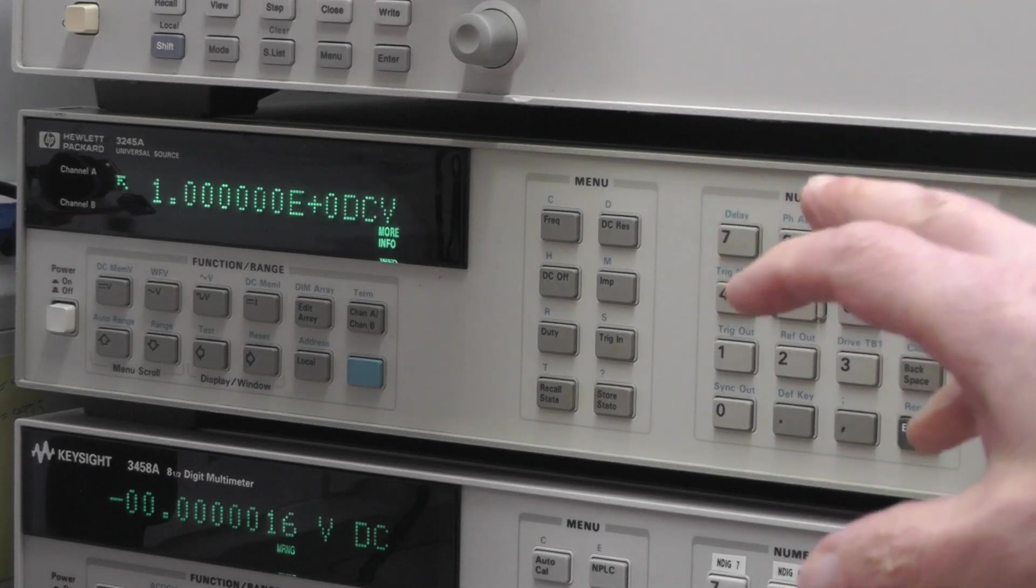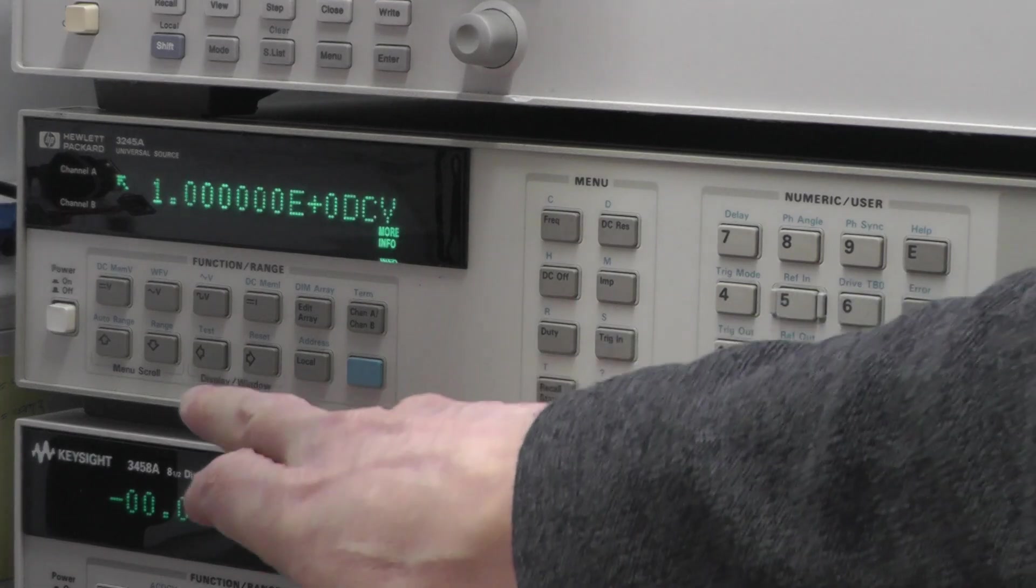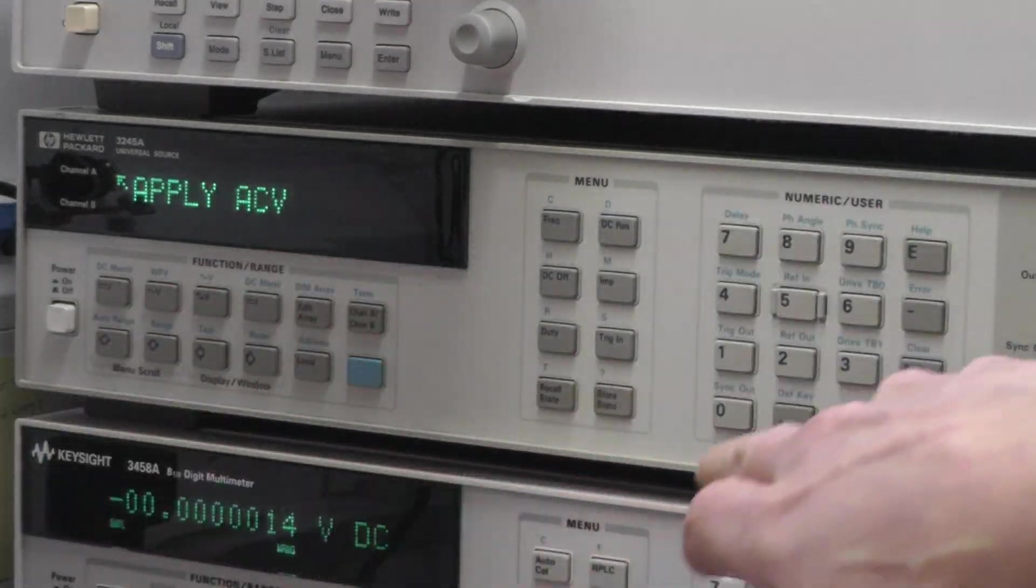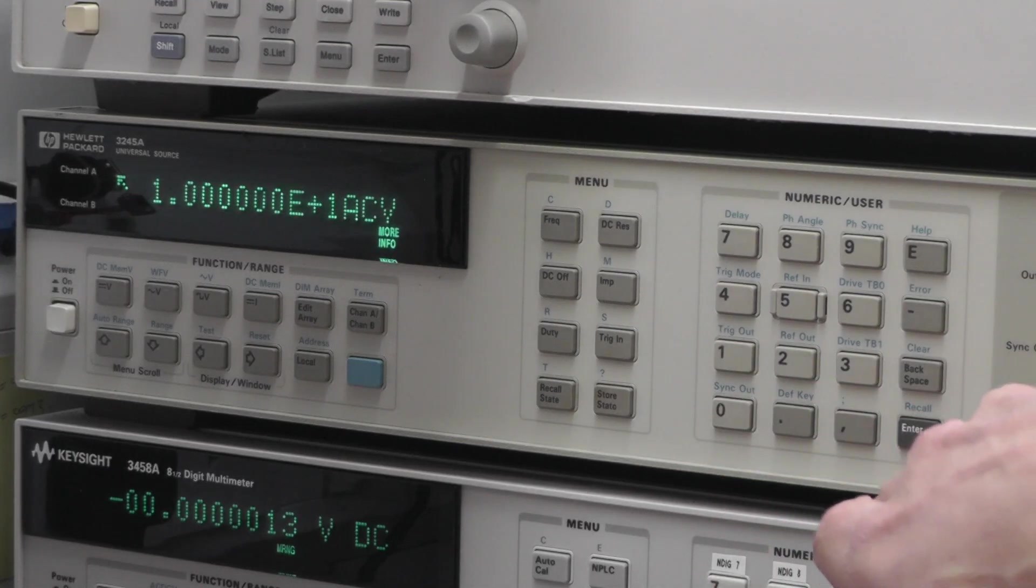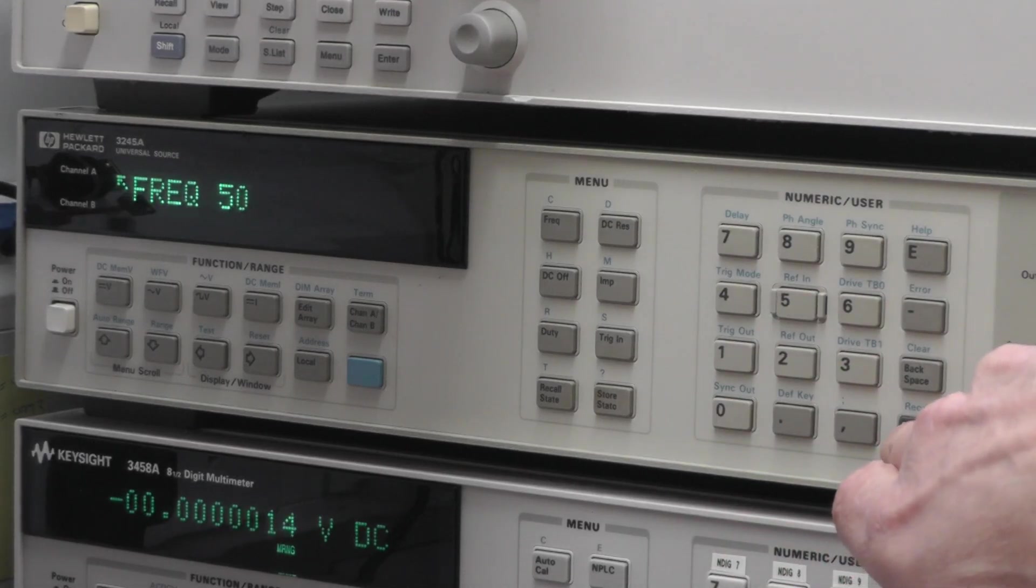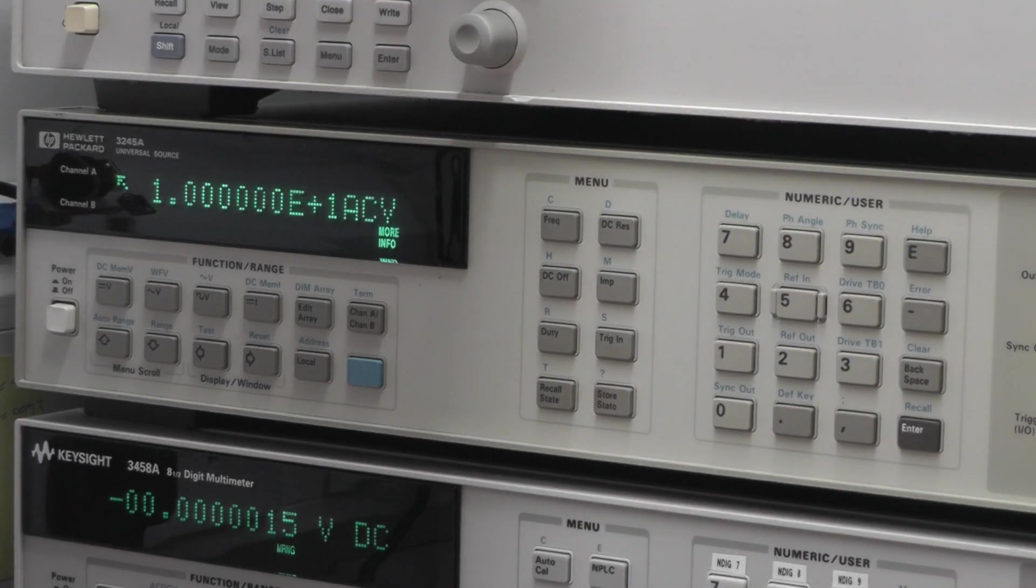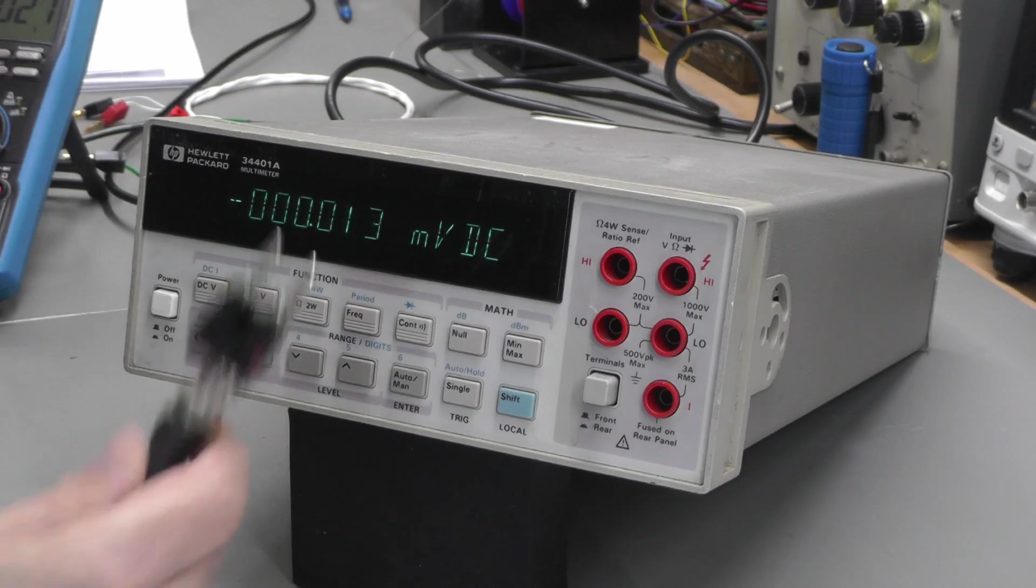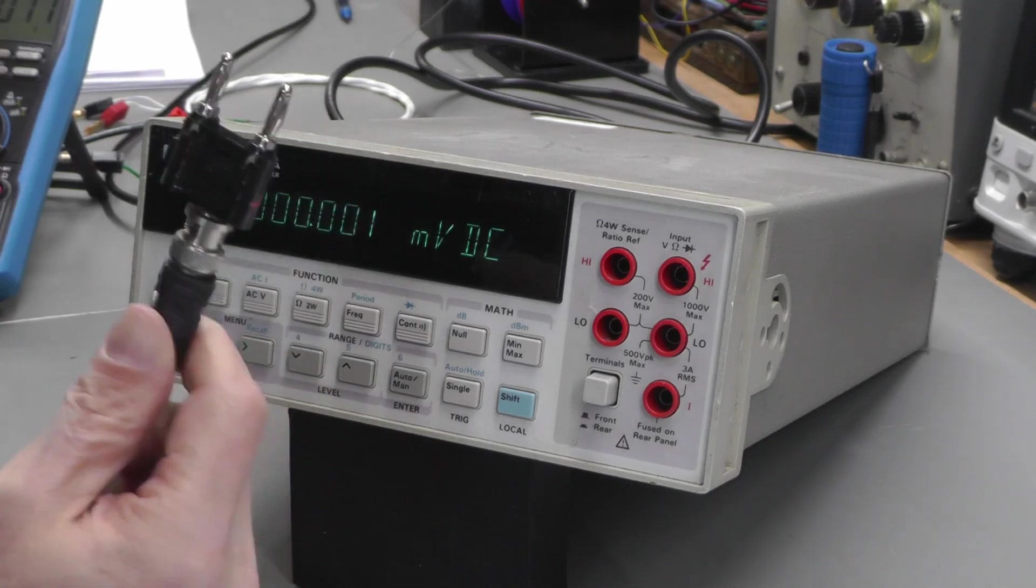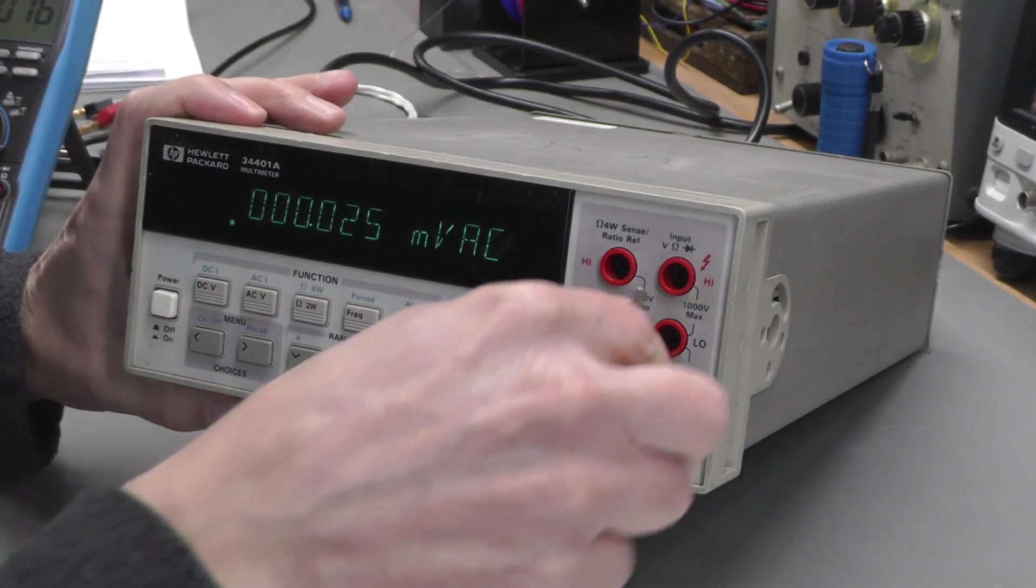To deliver an AC test voltage, I'm going to use my HP 3245A. First things first, let's set it for AC volts, 10 volts, and I'll set the frequency to 50 hertz. That's all set. Should be getting an output now on the BNC. Let's hook up directly to the multimeter.